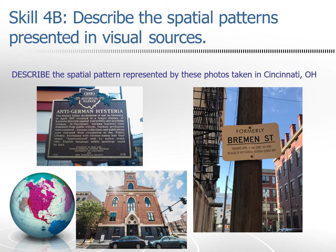Describe the spatial pattern represented by these photos taken in Cincinnati, Ohio. We usually go to the reading in Cincinnati every year, but not this year because of the COVID-19 situation. Here are three representations of cultural landscapes in Cincinnati: you can see anti-German hysteria and formerly Bremen Street. On the right-hand side, this relates to the geographic concept of sequent occupance — you can see the imprint left on a landscape based on former residents. The bottom picture shows a former Protestant church that is now the Taft Ale House — a great example of sequent occupance.